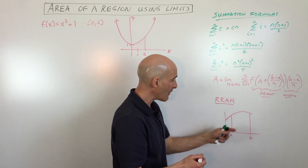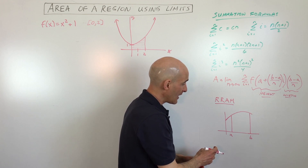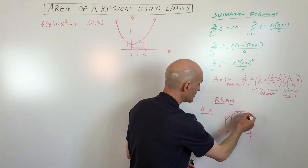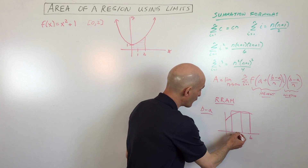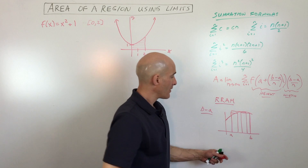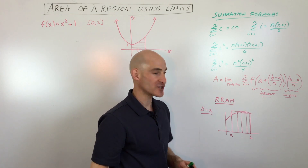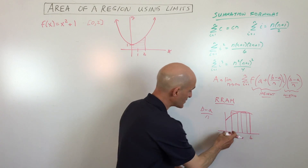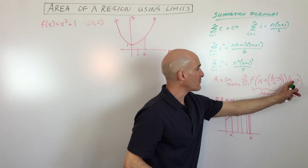The first thing we want to figure out is how many rectangles we want to use to divide up this region. If we take this distance, which is B minus A, and let's say we want to divide it up into just two rectangles, then the width of each rectangle would be B minus A divided by two. But if we wanted to divide it up into four rectangles, the area would be a little bit more accurate. What you do is take the width B minus A and divide it by N — N is the number of rectangles — so that gives you the width of each individual rectangle.